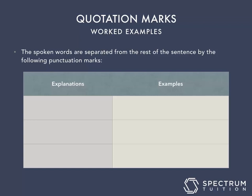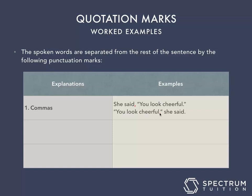The spoken words are separated from the rest of the sentence by the following punctuation marks. Number one: commas. For example, 'She said, comma, you look cheerful,' or 'You look cheerful, comma, she said.' The comma appears after the unspoken words that introduce the spoken words, and also after the actual spoken words before the unspoken words.